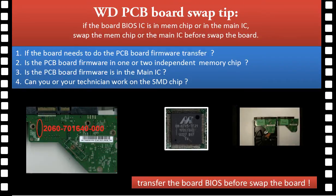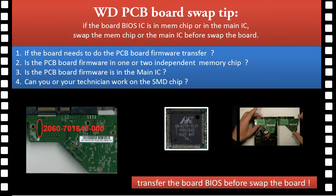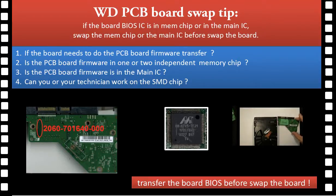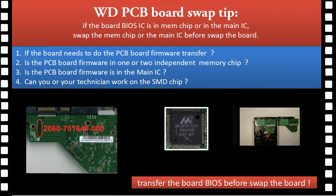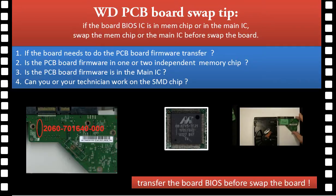This video covers the following questions: 1. What is the function of a hard drive circuit board? 2. What is the circuit board number? 3. Where to find the circuit board number? 4. What is the circuit board main IC? 5. What is the circuit board firmware? 6. Where is the circuit board firmware? 7. Why do you have to transfer the original board firmware to the new board? 8. How to transfer the board firmware? 9. Data recovery from hard drives whose circuit board or circuit board firmware is lost.